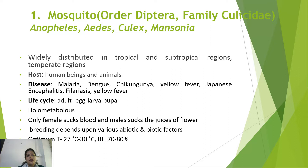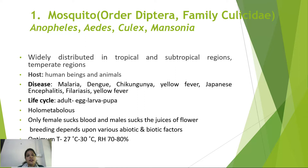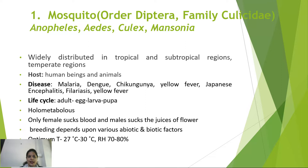The mosquito is a very important vector causing multiple diseases. It is widely distributed in tropical, subtropical, and some temperate regions. Hosts include human beings and many animals. Diseases transmitted include malaria, dengue, chikungunya, yellow fever, Japanese encephalitis, and filariasis. As holometabolous insects, their life cycle includes four stages: egg, larva, pupa, and adult.